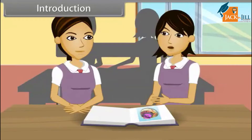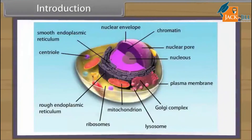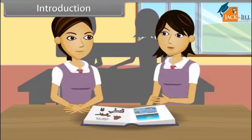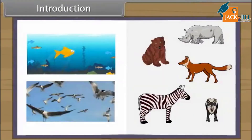Animals are eukaryotic, multicellular and heterotrophic organisms. Animal cells do not have cell walls. Most of the animals are mobile. Animals are aquatic, e.g. fishes, or terrestrial, e.g. reptiles, mammals, etc., or aerial, e.g. birds, on the basis of their habitat.